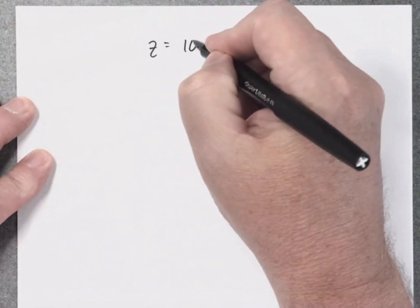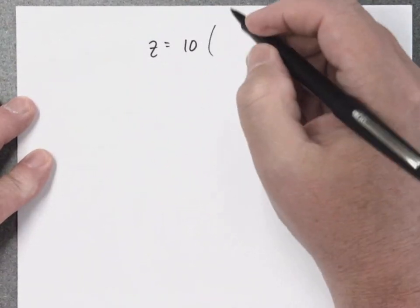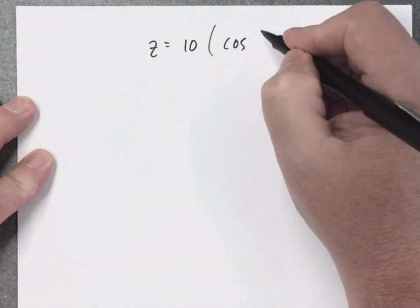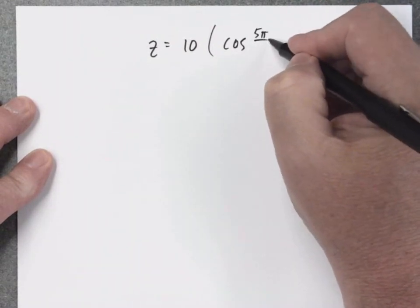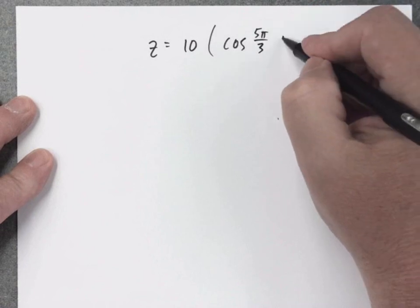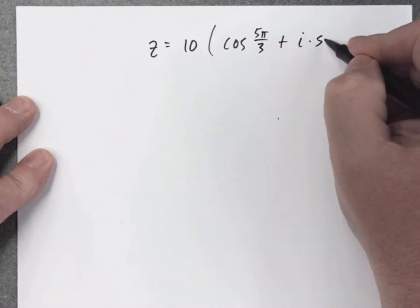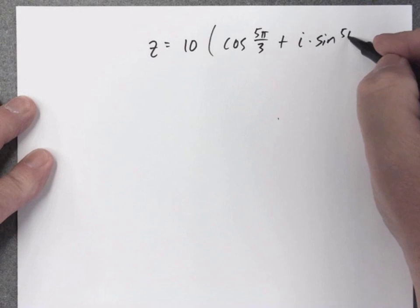We're going to work two problems. The first one, we're going to be given a complex number in polar form, and they want us to rewrite the number in rectangular form. They say type an exact answer. So here is this complex number in polar form. Of course, since we're asking for an exact number, we're expecting a special angle, which we in fact do have.